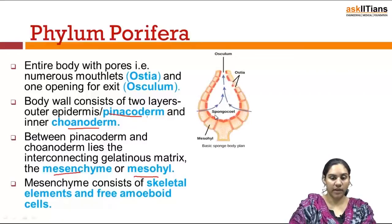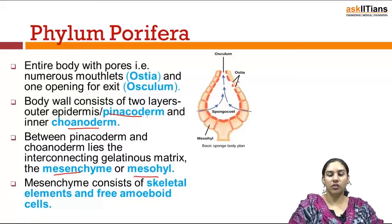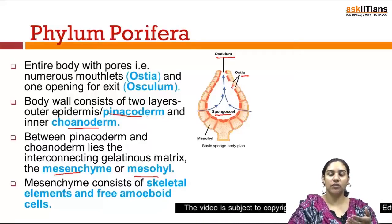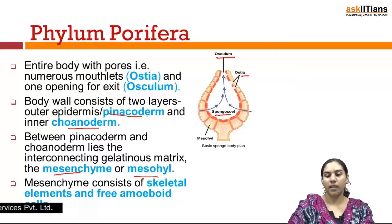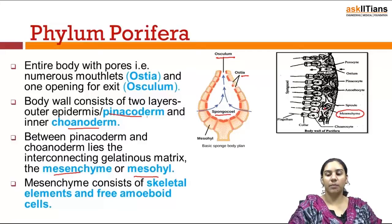In the basic sponge body plan, you can see numerous Ostia or pores on the body of the sponge. The body cavity of the sponge is known as the spongocoel, and through the spongocoel, water exits through the osculum. Water enters through the Ostia, flows into the spongocoel, and is taken out through the osculum. In the diagram, you can also see the mesenchyme layer present between the outer pinacoderm and the inner coanoderm.